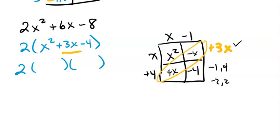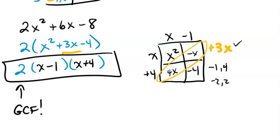So now I'm going to take those binomials and bring them over here. x minus 1 and x plus 4. You notice I kept my GCF up there in the front. I didn't lose him. And there's our final answer.